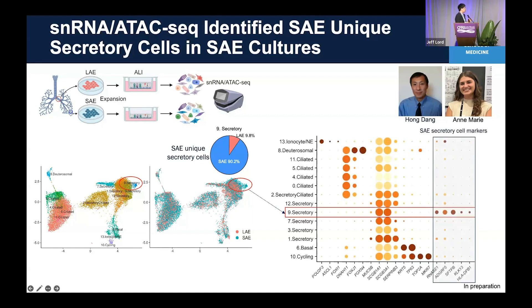When we look at small airway cell markers, secretory cluster number nine uniquely expresses these small airway cell markers. That means this population — not so large in number — is identified as the small airway-unique secretory cells that determine small airway identity.